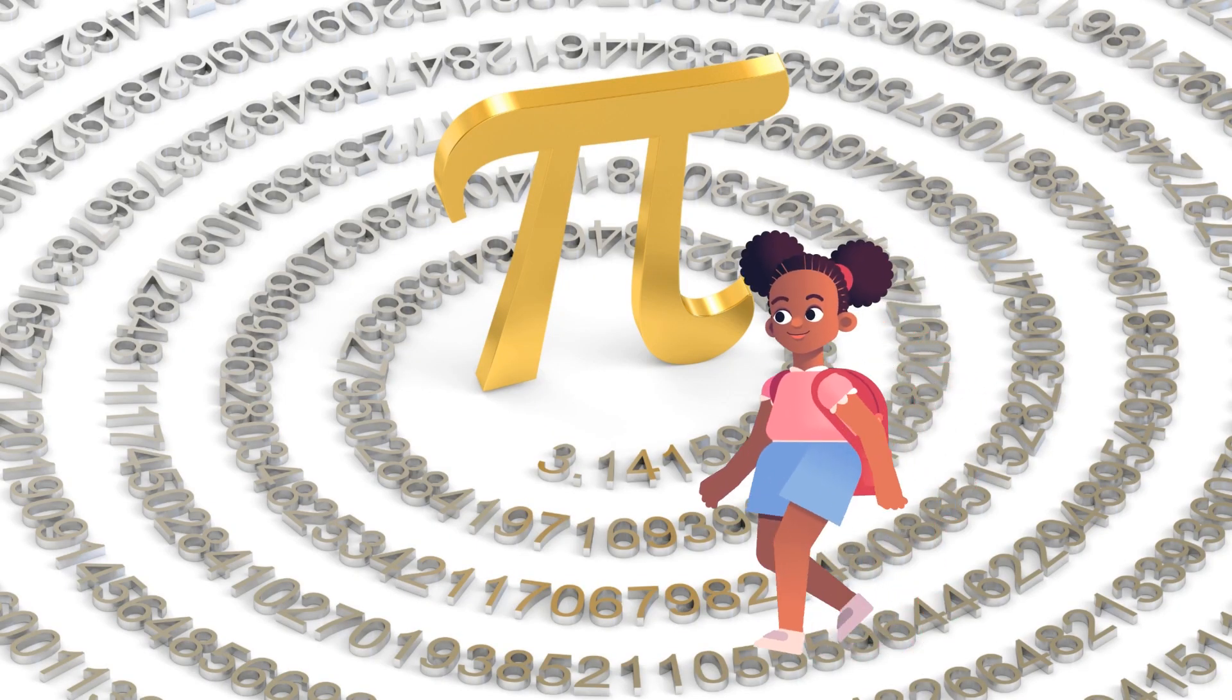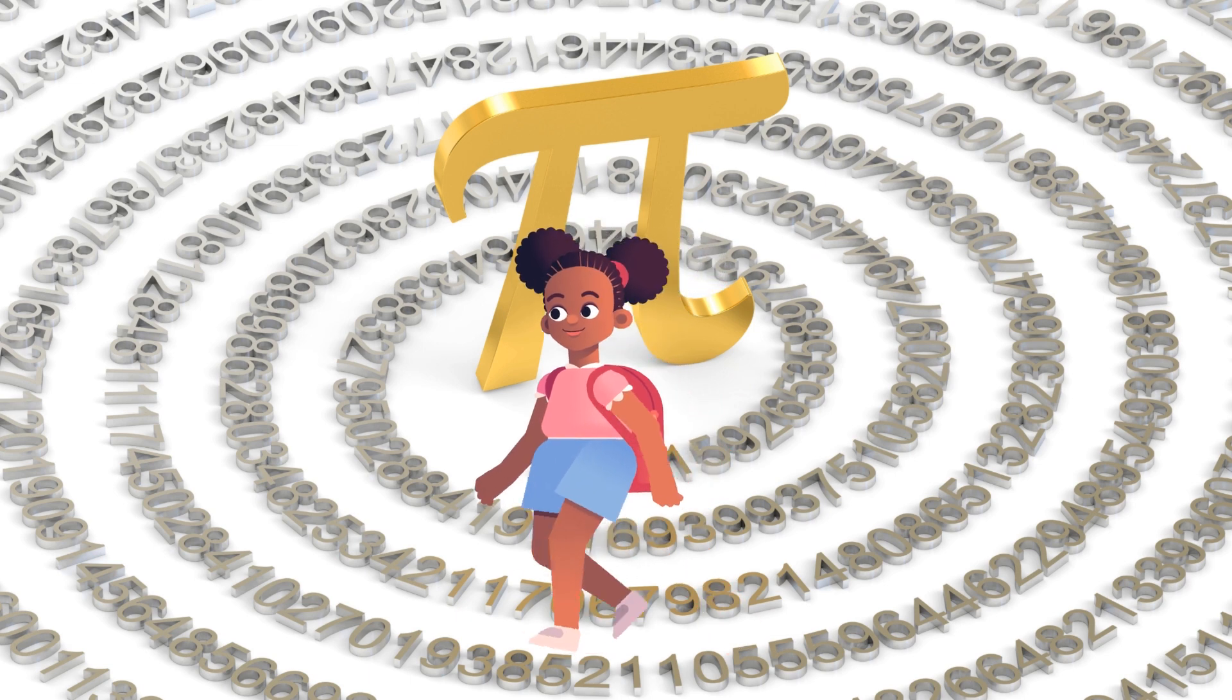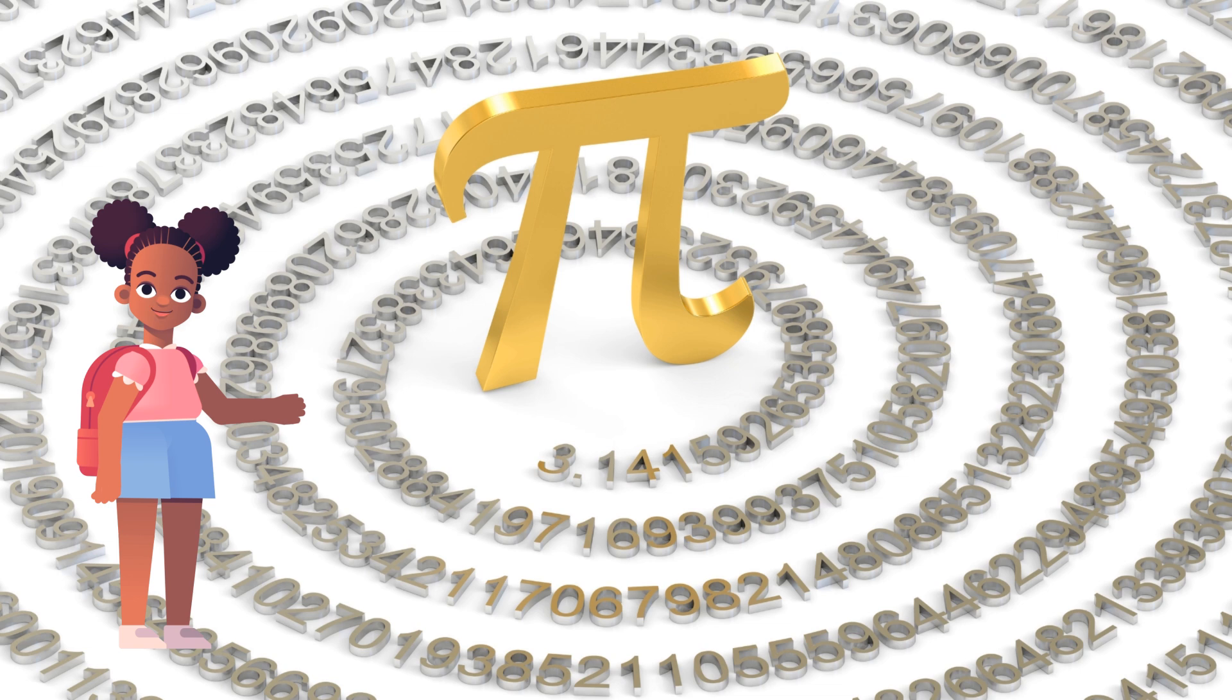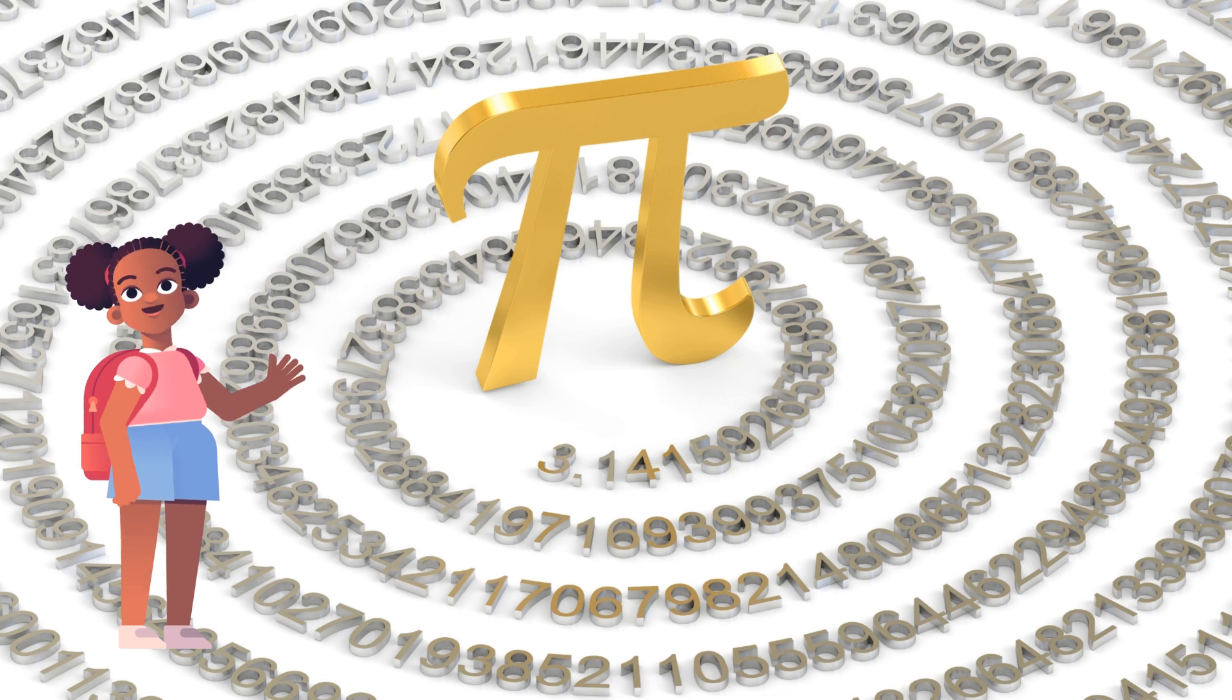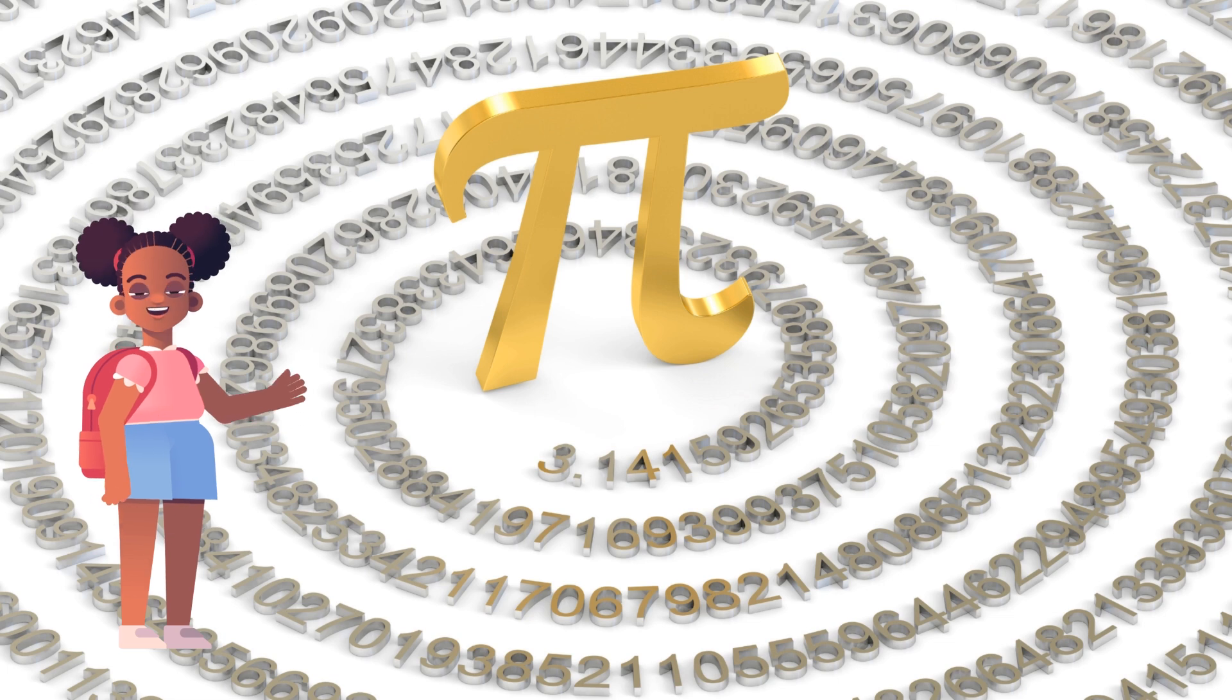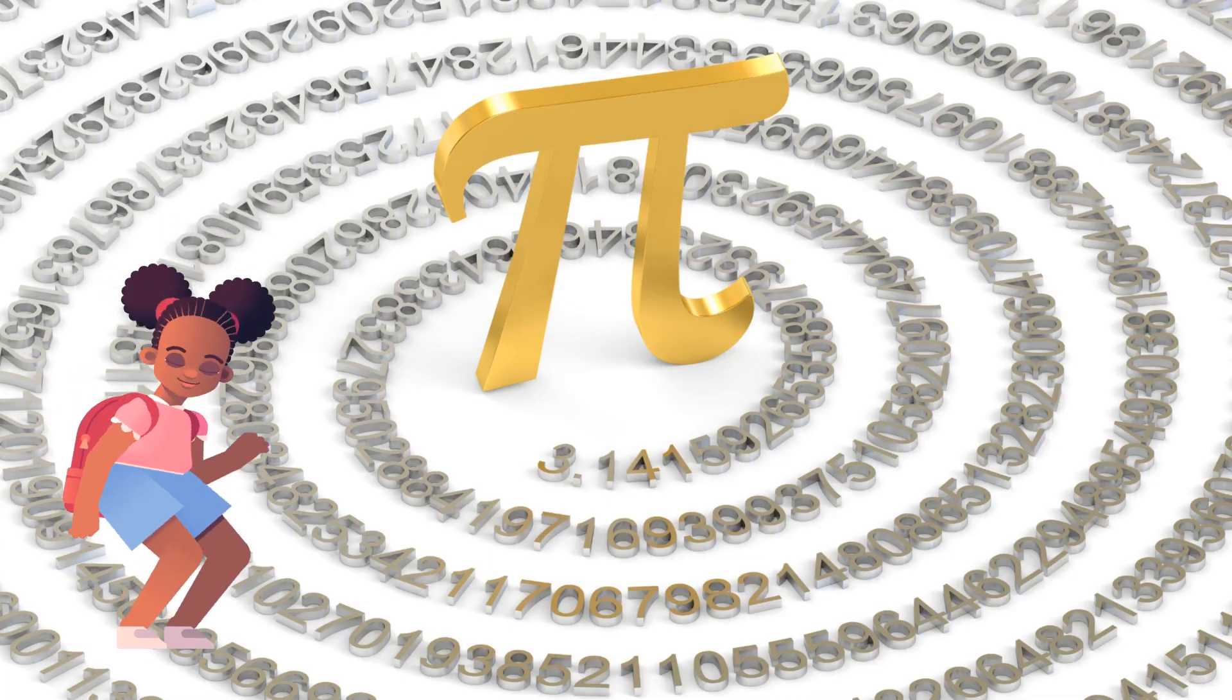Hold on to your hats, because we're talking about a number that's as wild and never-ending as a roller coaster! It's called Pi, and it's not just any number! It goes on and on and on! Imagine it like a never-ending dance party for numbers! And guess what? Pi is like the VIP guest at the coolest math parties around the world!